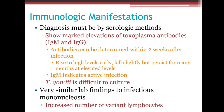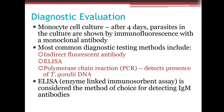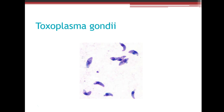We test for toxoplasmosis using IgG and IgM; antibodies can be detected within two weeks after infection. IgM indicates active infection. Testing methods include monocyte cell culture, indirect fluorescent antibodies, ELISA, or PCR. Under the microscope, Toxoplasma gondii appears as a crescent-shaped organism with a small solid piece in the middle. That concludes our lecture for Module 10.